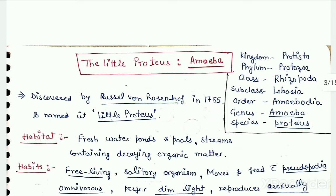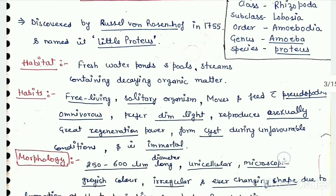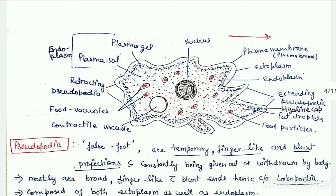Amoeba Proteus is commonly called the little Proteus. As far as morphology is concerned, being a member of kingdom Protista, it is a unicellular eukaryotic organism, which means it is a eukaryote and the entire organism consists of only one cell.